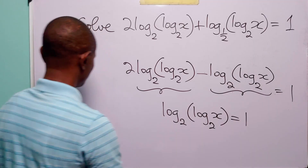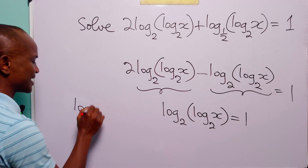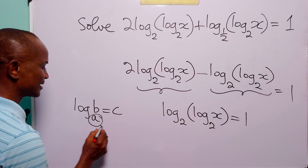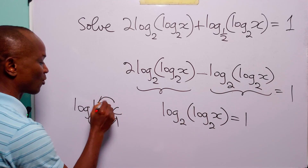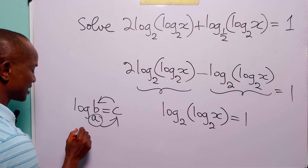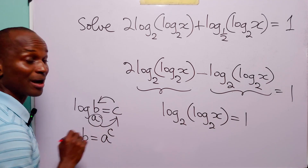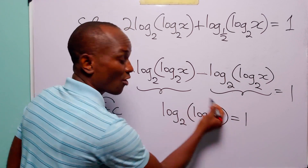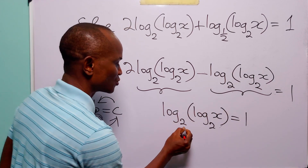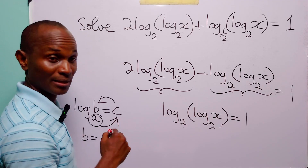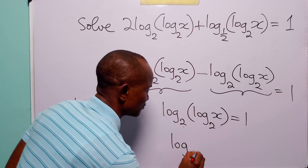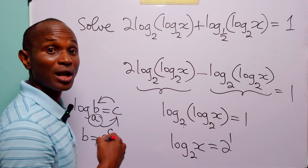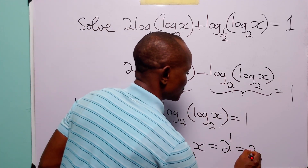Now remember that when we have log base a of b equal to c, this simply means that a to the power c is equal to b. So that means that here log base 2 of x is equal to 2 to the power 1, which of course is equal to 2.